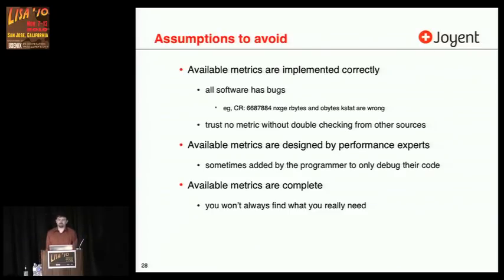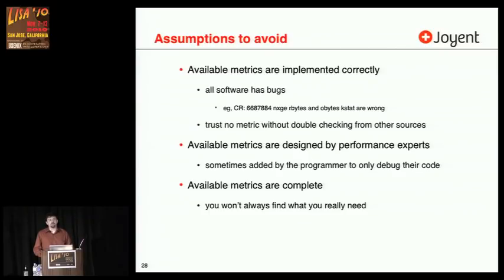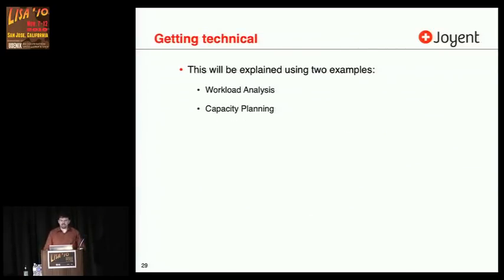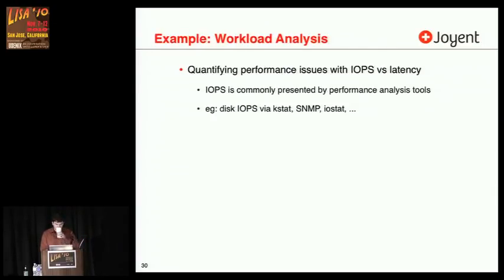For workload analysis: quantifying performance issues with IOPS versus latency. I'm picky on IOPS — it's commonly presented by performance analysis tools, for example disk IOPS via K-Stats, SNMP, iostat. I do a lot of performance work with customers and examining IOPS is often one of the early metrics they're reaching for to try and understand a performance issue, which can be problematic. IOPS really depends on where the IO is measured. Walking through the software stack: the application requests IO to a library or syscalls, to VFS, to the file system, possibly through RAID, and then out to the disk devices.